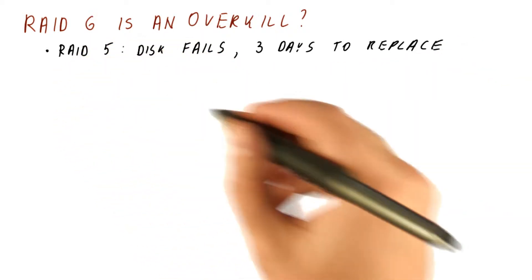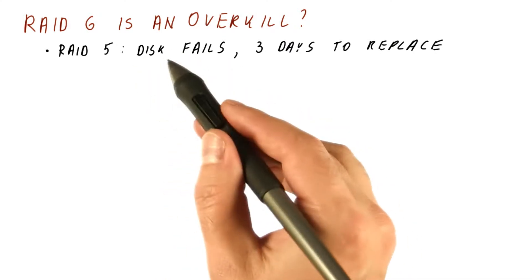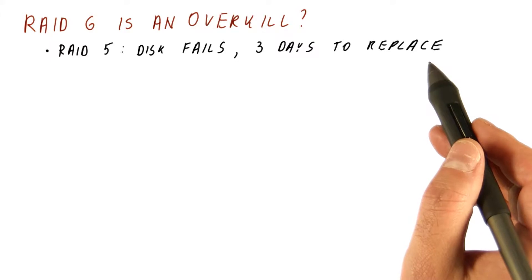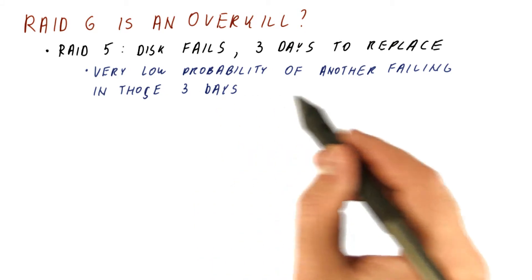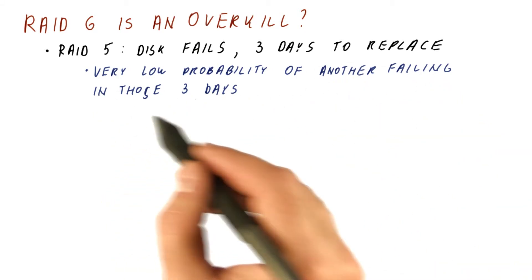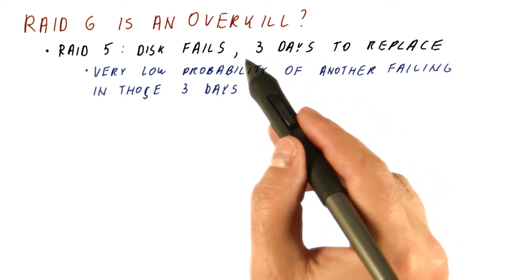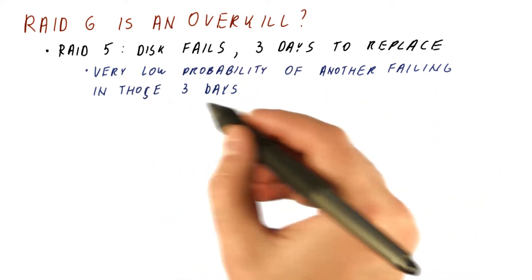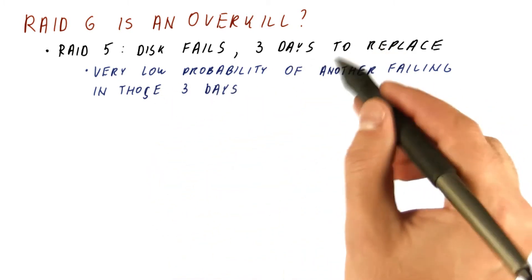The argument for RAID 6 being overkill is that when a disk fails in RAID 5, it takes up to a couple of days to replace. Sometimes you have a spare disk, and usually a data center will have that, so it's going to take less than an hour. There is a very low probability that another disk in the array will fail in those three days. If it fails after those three days, it doesn't matter because by then we are back to being protected by the extra disk. So the second disk failure needs to happen during the time when one of the disks is in the failed state.